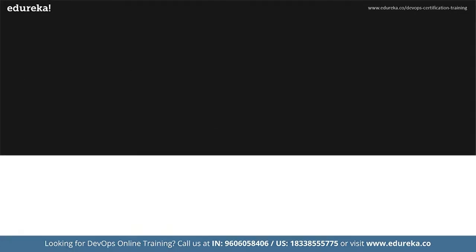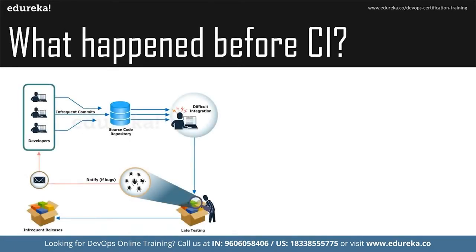Let's move forward by understanding why we need continuous integration. This is how a process looked before CI. There's a group of developers making changes to source code in a repository — which could be Git, Subversion, etc. When the entire source code of the application is written, it gets built by tools such as Maven, then deployed to a test server. If there are bugs, developers are notified via a feedback loop. If there are none, the application is deployed to production.